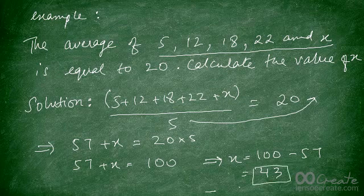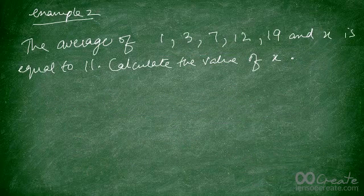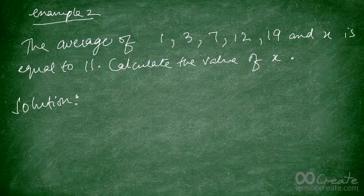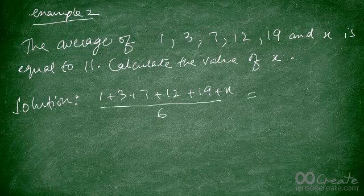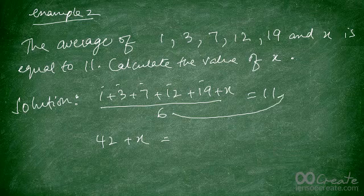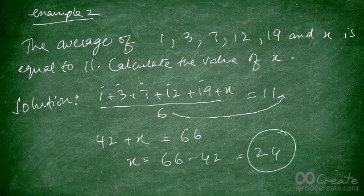Here's a second example. The average of 1, 3, 7, 12, 19, and x — that's six values — is equal to 11. Calculate the value of x. Setting up the equation: (1 + 3 + 7 + 12 + 19 + x) ÷ 6 = 11. The sum of the known values is 42, so 42 + x = 66. Therefore x = 66 − 42, which gives you 24.